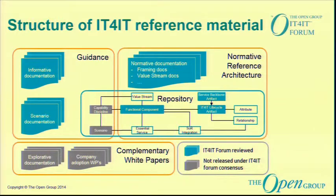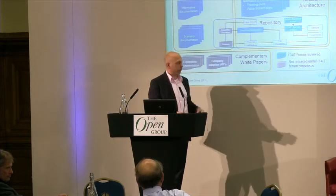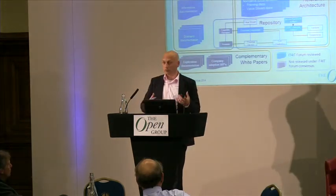Going back to Lars's introduction, he showed the structure of the reference material. The core part is the functional component, the lifecycle artifacts, and the source backbone artifact associated with that. However, applying a reference architecture requires more than that — as Lars indicated, we also have scenarios and capability disciplines. So we started by creating a scenario: multi-vendor incident management. Then we asked which capabilities you'd want to use, which is where capability disciplines come in.